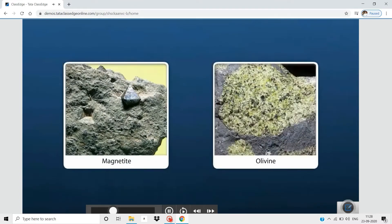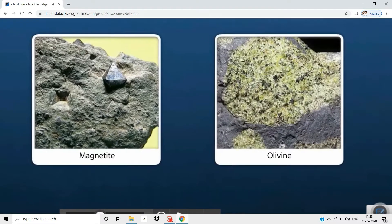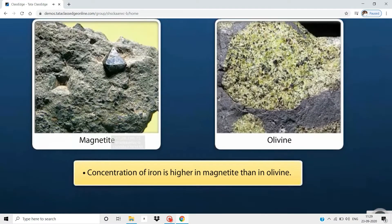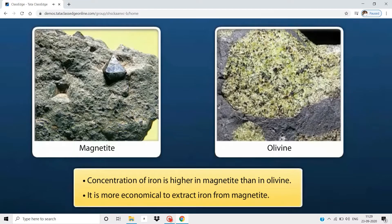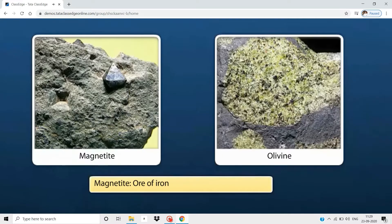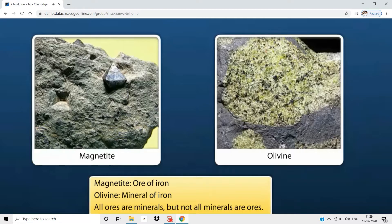Magnetite and olivine are examples of minerals which contain iron. However, concentration of iron in magnetite is higher as compared to olivine. In addition, it is more economical to extract iron from magnetite than from olivine. So, magnetite is an ore of iron, whereas olivine is a mineral of iron. In other words, all ores are minerals, but not all minerals are ores.